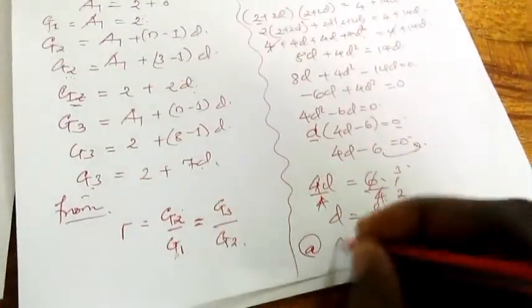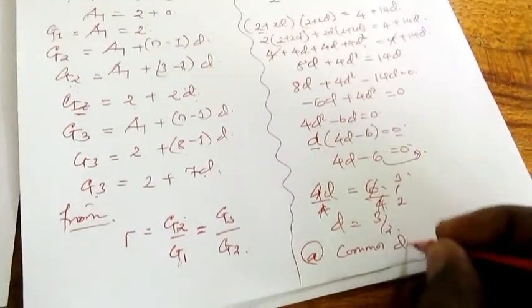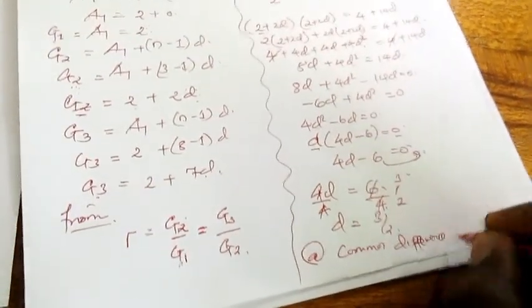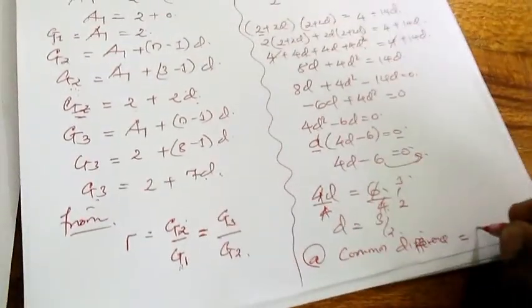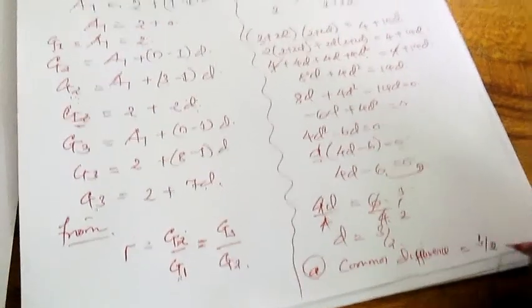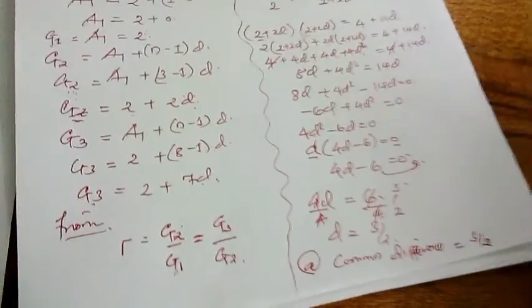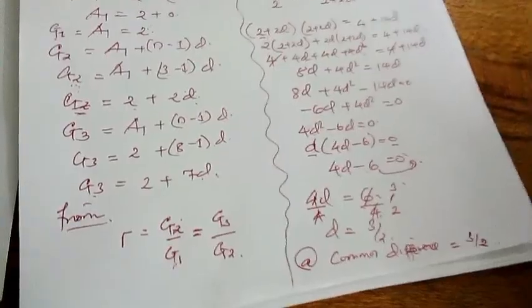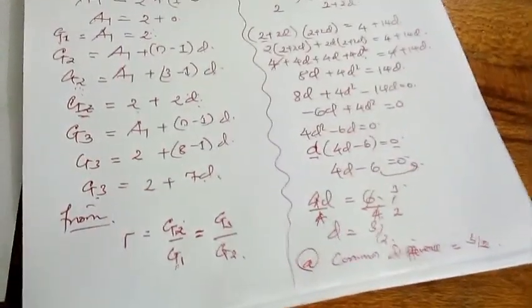Starting to solve for D, the first one is 0. But the second becomes 4D minus 6 equals 0. Moving this here, we get 4D equals 6. Divide by 4, divide by 4. Once we simplify here by 2, we get D equals 3 over 2. This is the common difference.